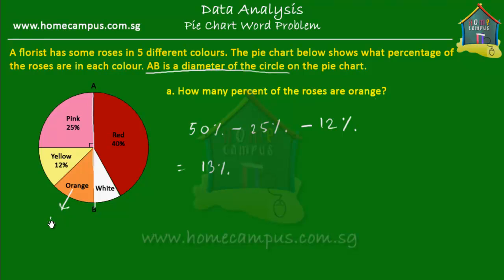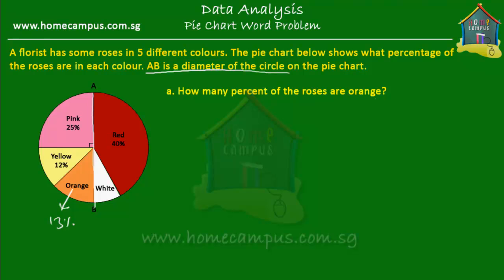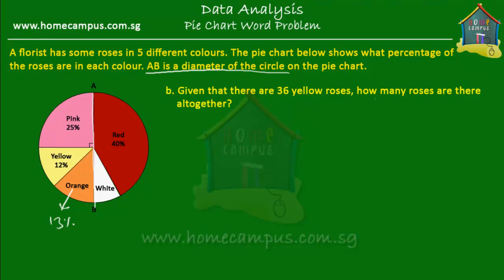So 13% of the roses are orange. That's quite easy. Let's see what the next question is. It says: given that there are 36 yellow roses, how many roses are there altogether?